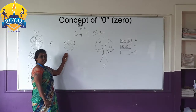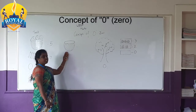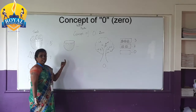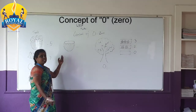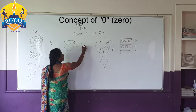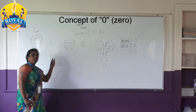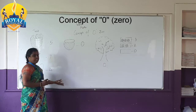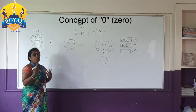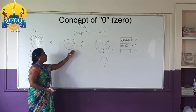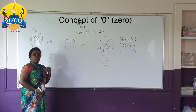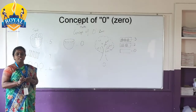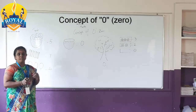What is this? This is an empty basket. Empty means zero. Zero means nothing, empty, no objects. So we write zero. I hope you all understood the concept of zero.